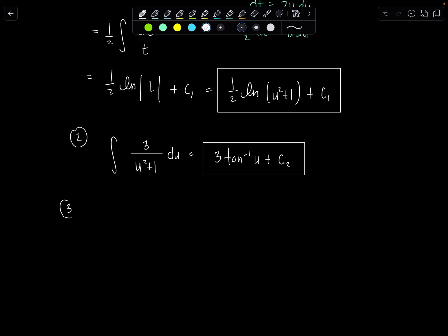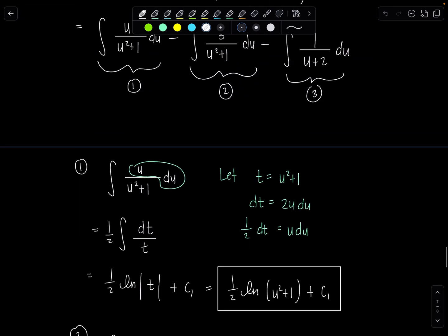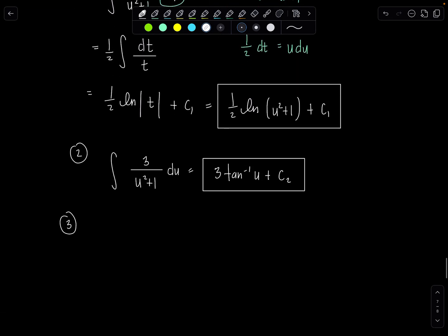Third integral also had a minus sign in front of it right. I'll bring that back in. It's just 1 over u plus 2 du. The plus 2 isn't doing anything wild. So ln absolute value u plus 2 plus c3.